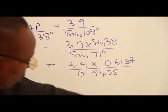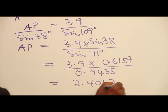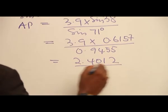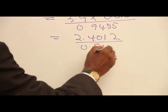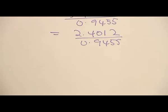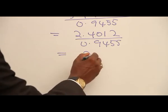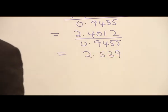So we will solve this, or rather simplify this, to give us 3.9 times 0.6157, and that will give you 2.4012 divided by 0.9455. So if we divide that, we have this to be equal to 2.539.